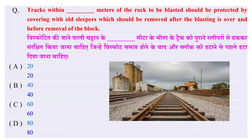Tracks within how much meters of the rocks to be blasted should be protected by covering with old sleepers, which should be removed after the blasting is over and before removal of the block? विस्फोट की जाने वाली चट्टान के कितने meter के भीतर के track को पुराने sleeperों से ढककर संरक्षित किया जाना चाहिए? Options: 20 meter, 40 meter, 60 meter, या 80 meter — और इसका सही जवाब है 60 meter।